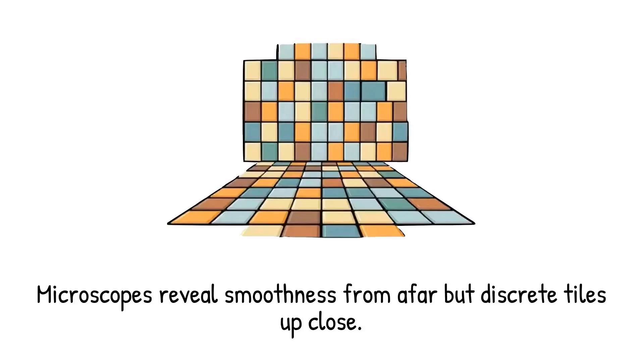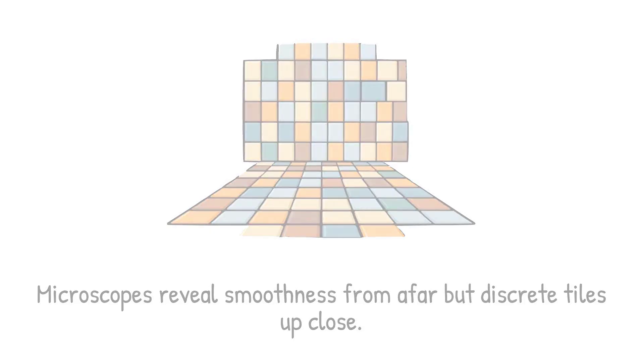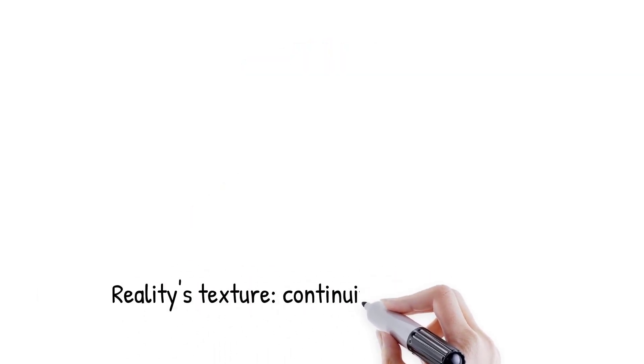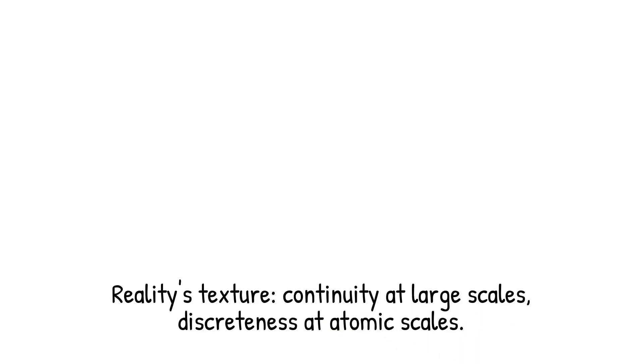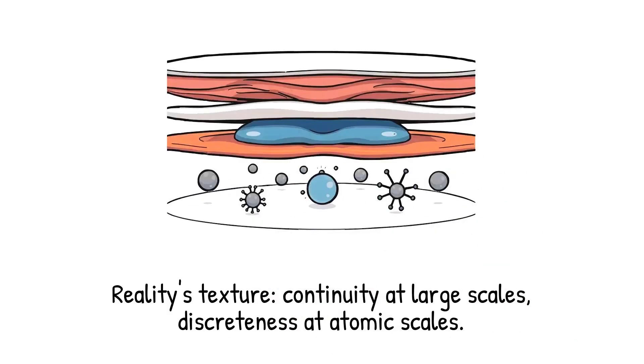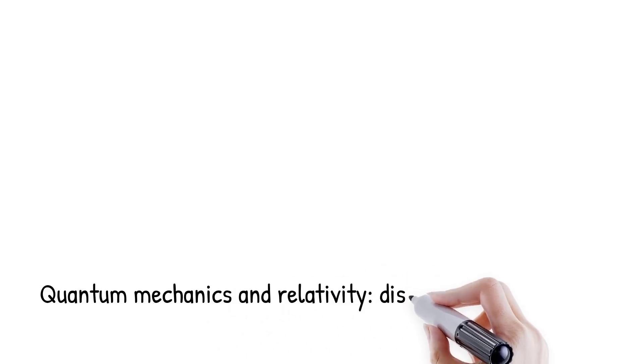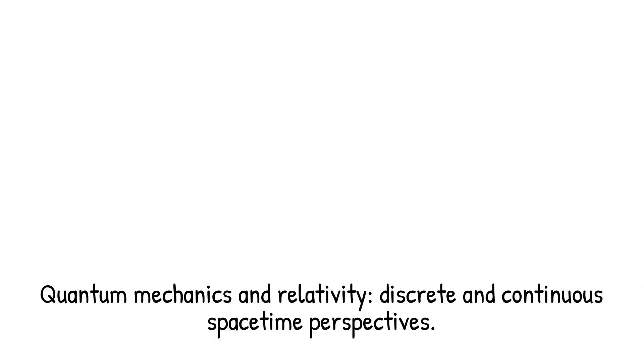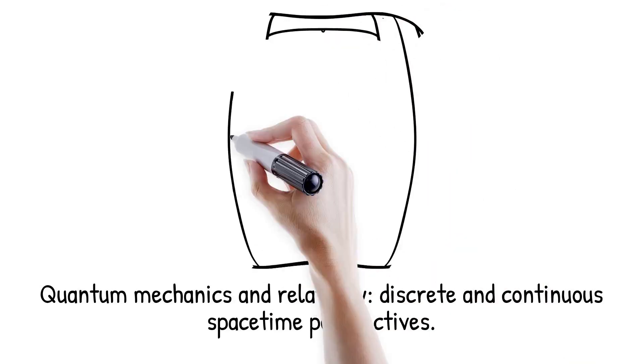The paradox is whether reality is fundamentally continuous or discrete. At human and cosmic scales, smoothness prevails. At atomic scales, discreteness dominates. The two views seem contradictory, yet both are essential for science to describe nature. Perhaps reality is layered with discreteness at the foundations and continuity as an emergent property. Or perhaps both are approximations of a deeper structure we have yet to discover. The tension between continuity and discreteness defines the mystery of reality's true texture.